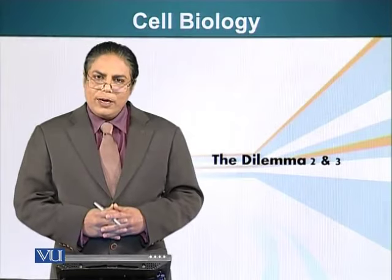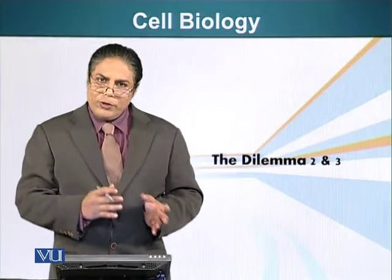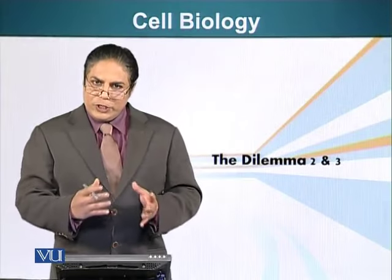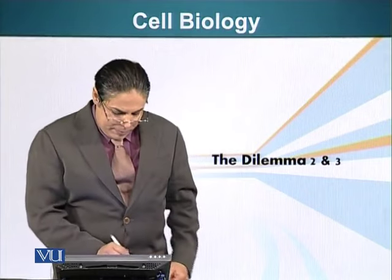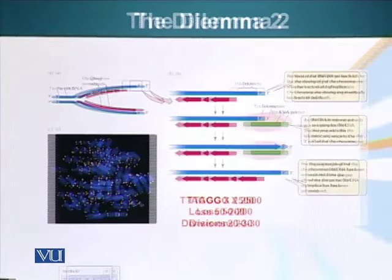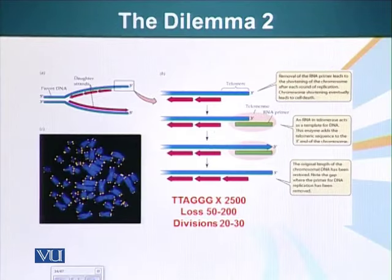In this module, we look at the other two dilemmas associated with DNA replication. One of the dilemmas we already talked about is how we get rid of the RNA primer from the lagging strand.